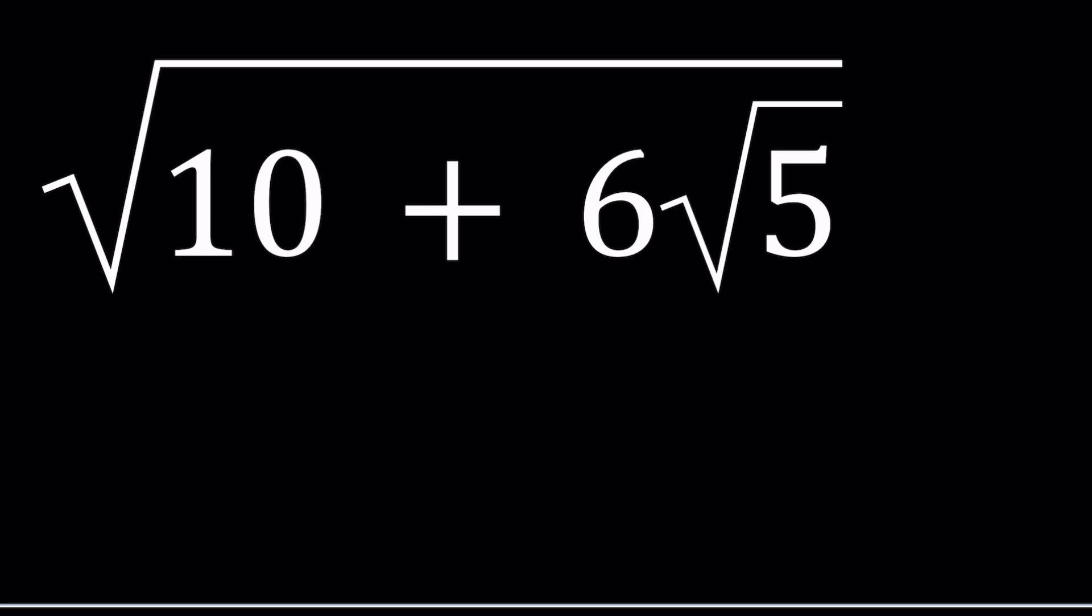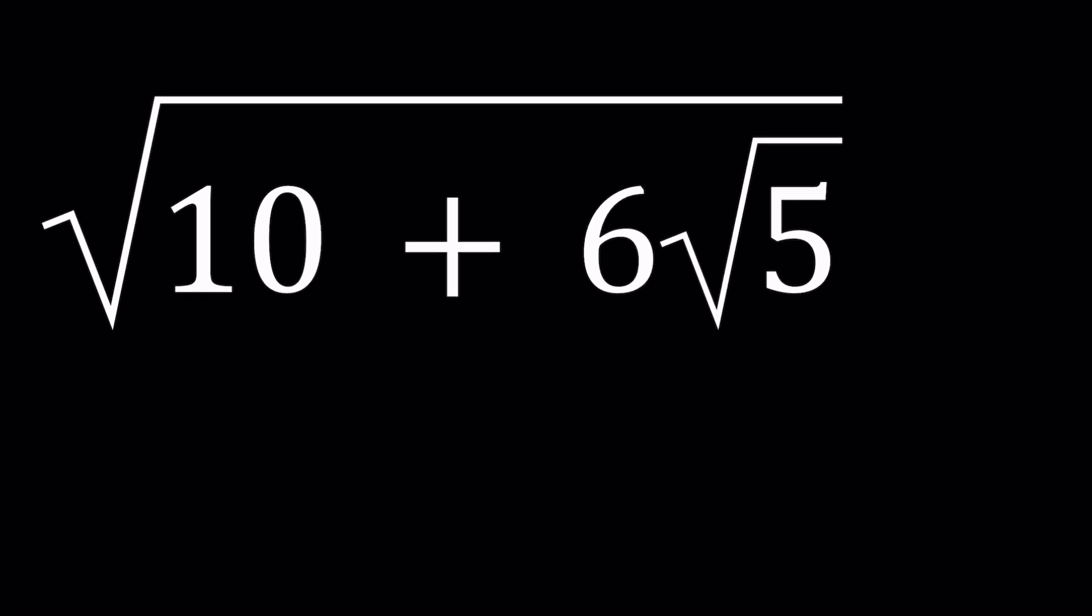So how do you denest something like this? One of the things that come up is actually there is a formula. Whenever you have something like a plus square root of b, when I say square root of b, it doesn't have a coefficient, but this 6 you can easily put that inside by squaring it. So that could be fixed.